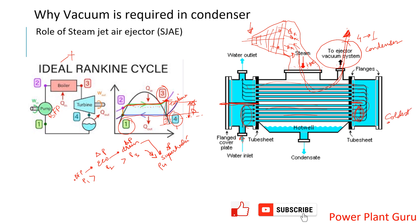The coldest cooling water is at the bottom and the relatively hotter water is at the top. Steam entering the condenser first interacts with the warmer upper section and, as it cools and descends, it interacts with the coldest cooling water at the bottom. This counter-flow arrangement improves condensation efficiency.